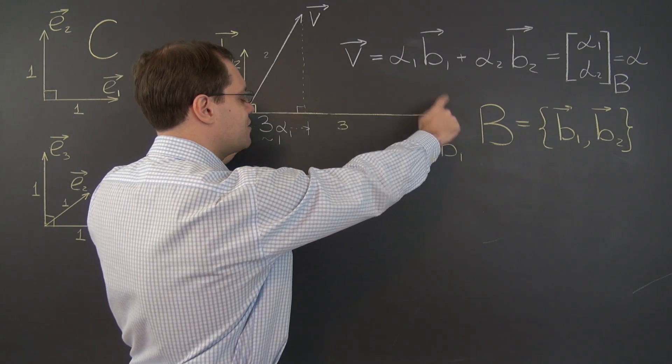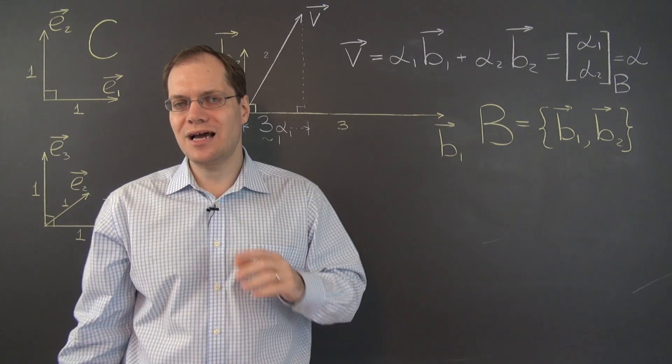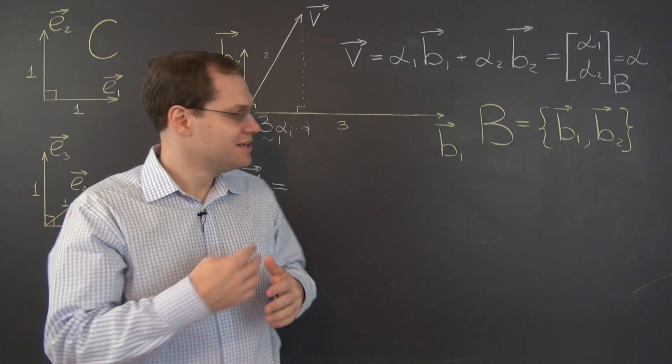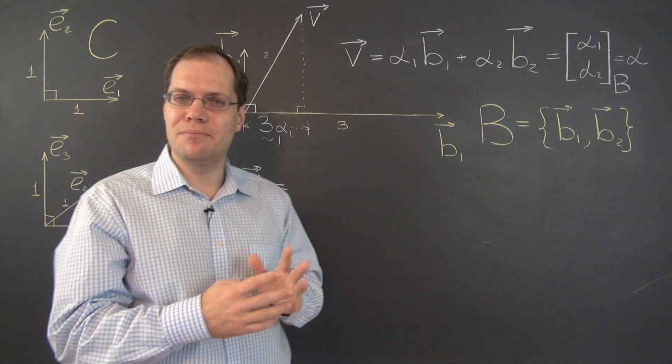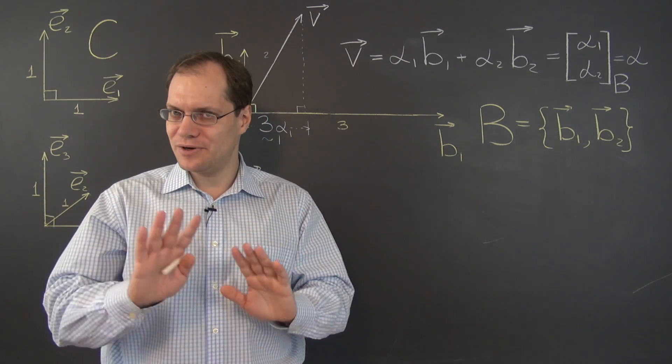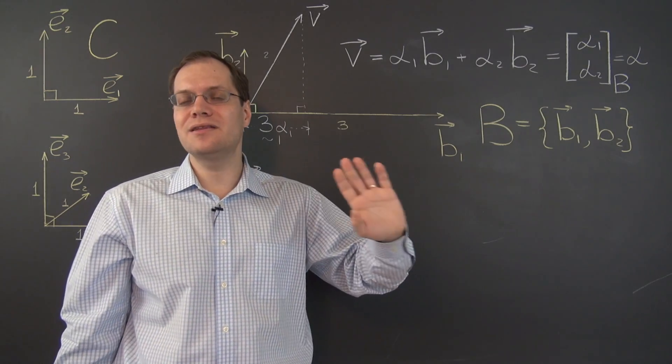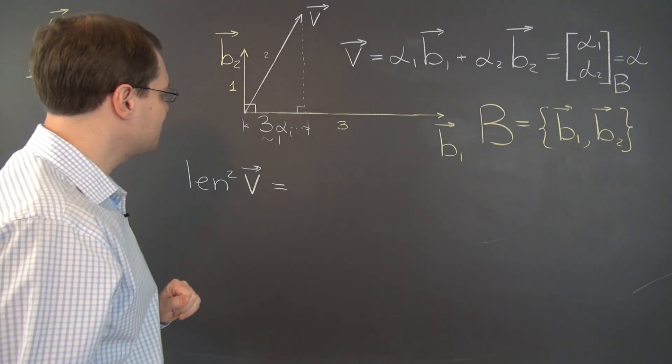Or more generally, the length of the vector b1 times alpha 1. And of course, it still hinges on the fact that this is the right angle. Things would become much more complicated if we gave that up, but we haven't given that up. Ultimately, of course we will, but not right now.